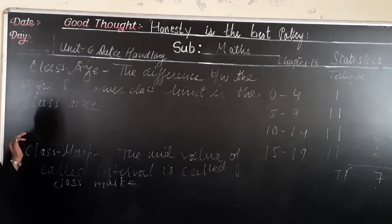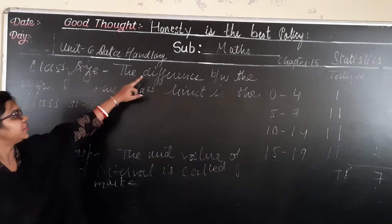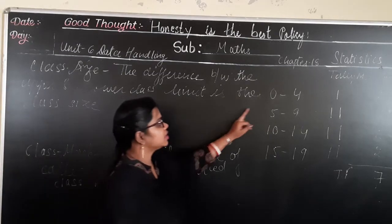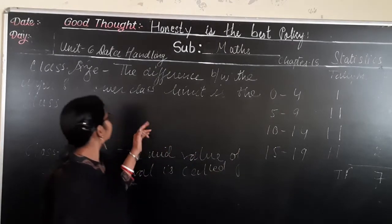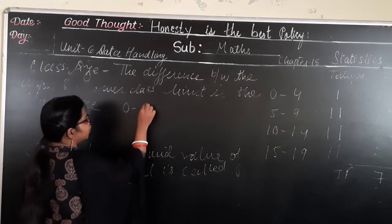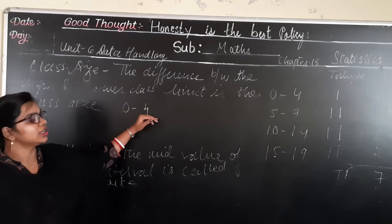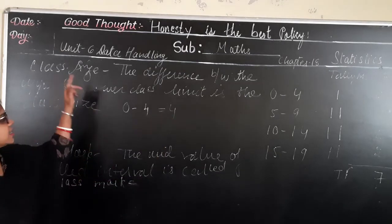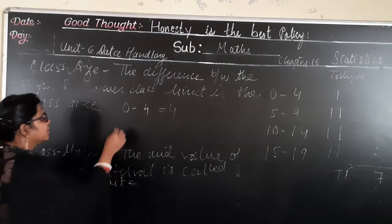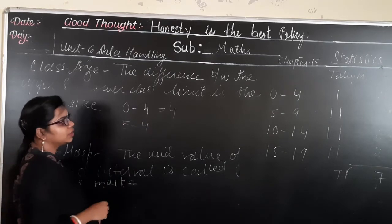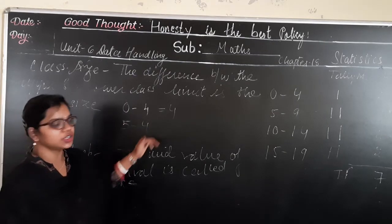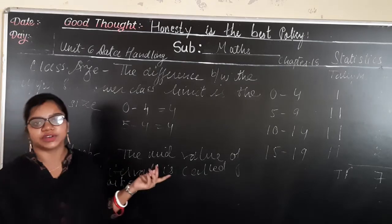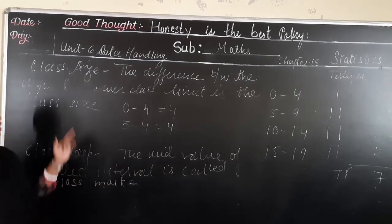Now the next topic is class size. The difference between the upper and the lower class limit is known as the class size. Suppose it is given as 0 to 4 — the class size is the difference between the upper limit and the lower limit.